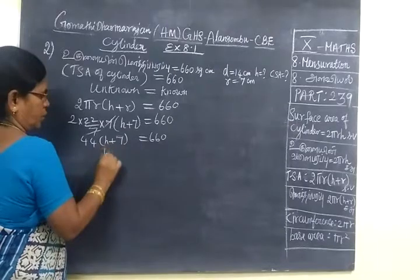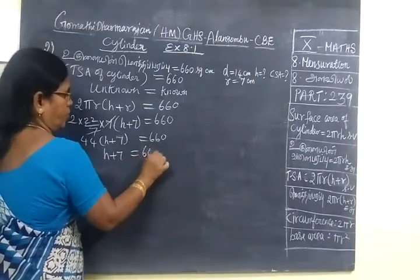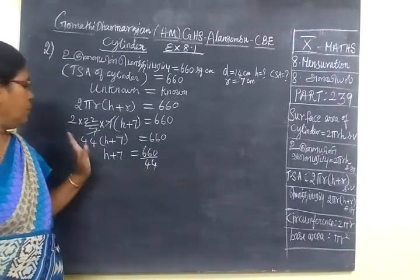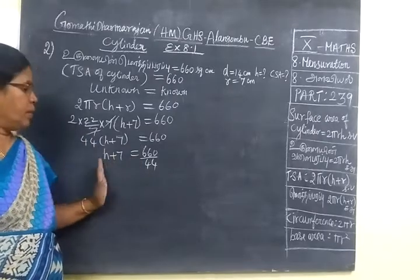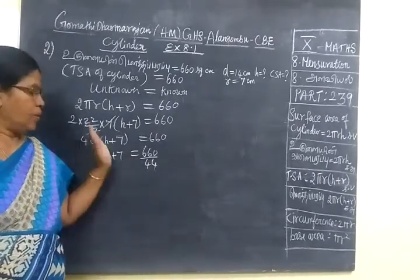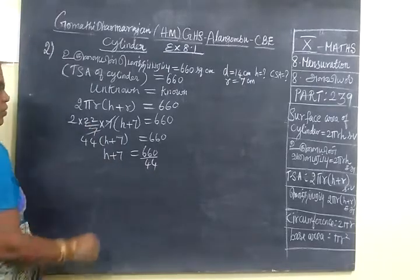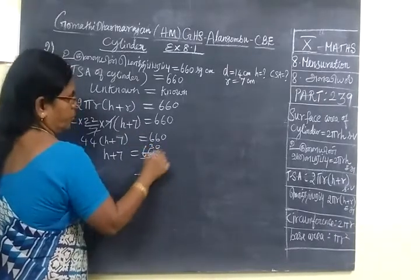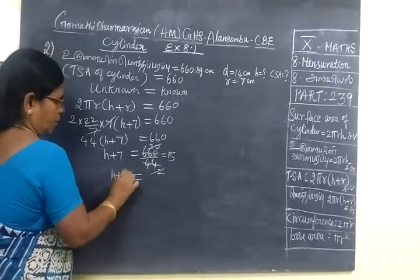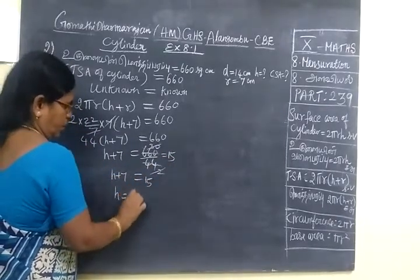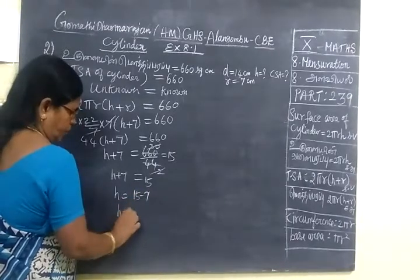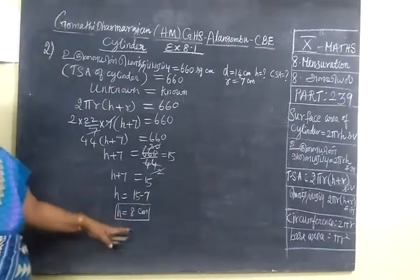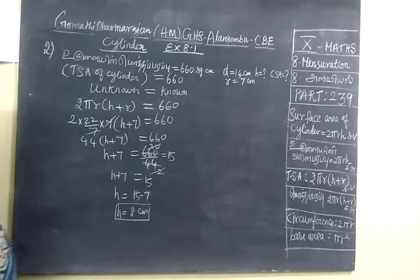44 will come to the denominator. The numerator, the denominator - plus not minus, minus not plus. In the basic concept it is important. So in the 22 table, 2 times, 3 times, this cancels, so 15. So h plus 7 equal to 15, therefore h equal to 15 minus 7, so h equal to 8 centimeter. You write with unit, whenever you write the answer, you write with unit. h is 8 centimeter.